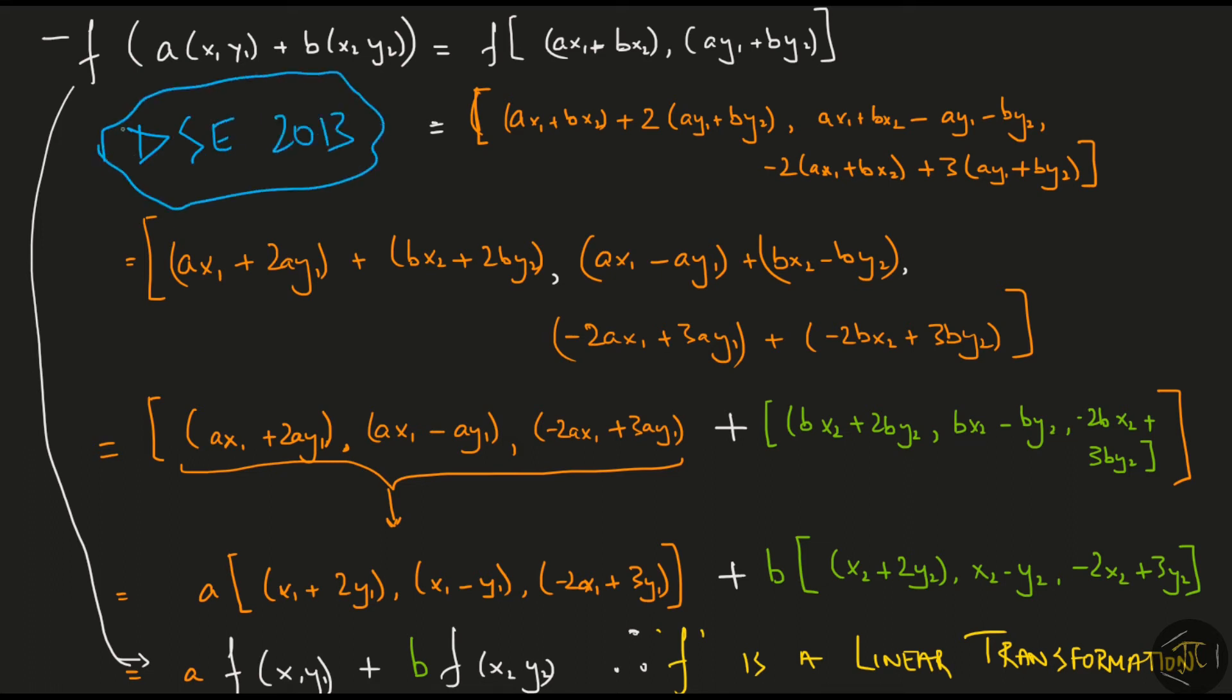And this is a question from the DSE 2013 exam. The previous example told us that the transformation took vectors from R² and took them to vectors in R³. Now if I were to do that for every vector in R², I would get a subset of R³ over here. This subset of R³ here, where all the vectors in the input space are mapped to, is called the image of the transformation. The image is a subset of the codomain. Sometimes it is the entire codomain, sometimes it is not.